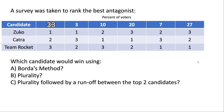Now let's look at another example. A survey was taken to rank the best antagonist, and we're told we have a percentage of voters instead of a specific number. They're asking who would win if we use Borda's method, then if we use plurality, then if we use plurality followed by a runoff between the top two candidates. You will see questions like this on exams and homework where a single preference ranking table is given and you must determine the winner under multiple different methods.